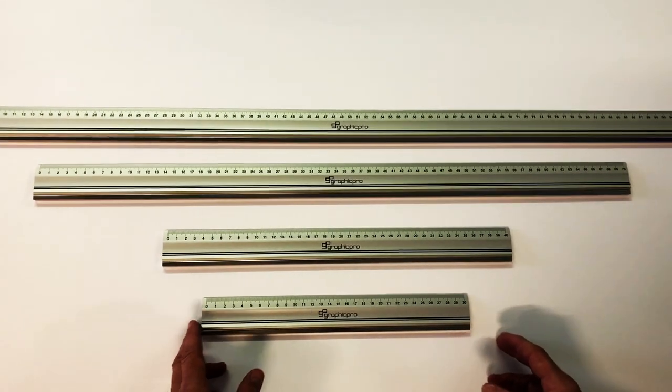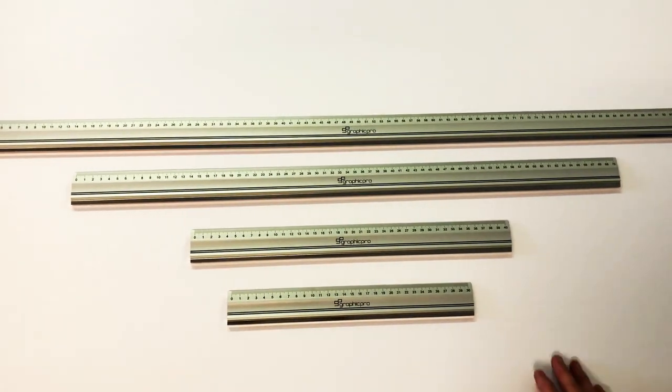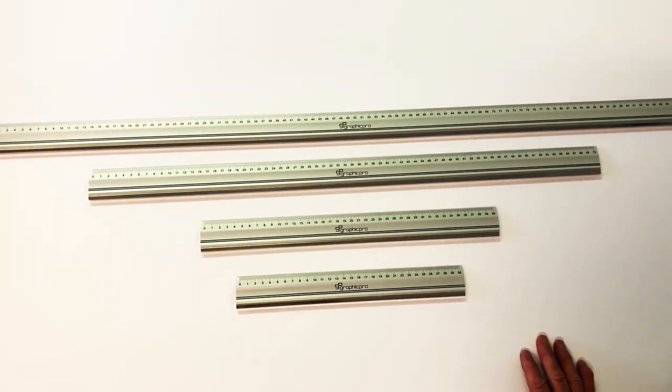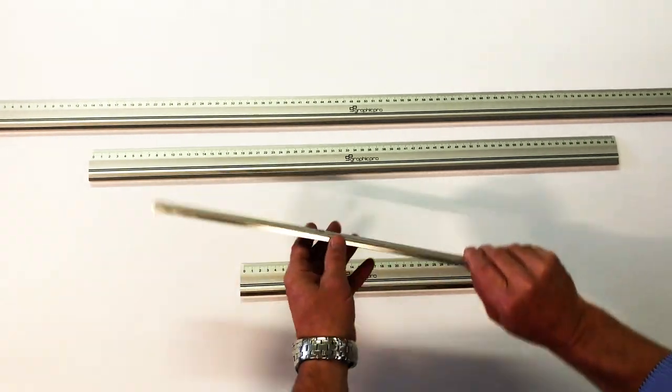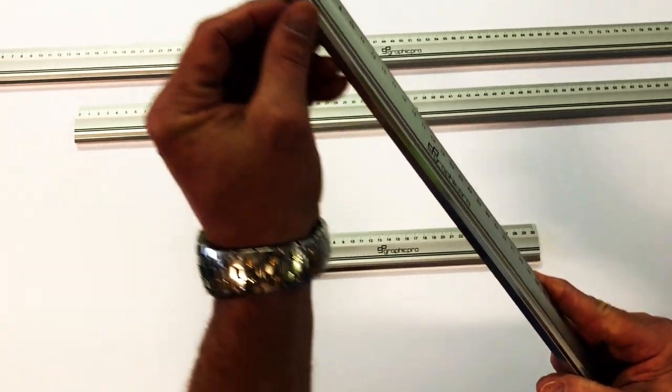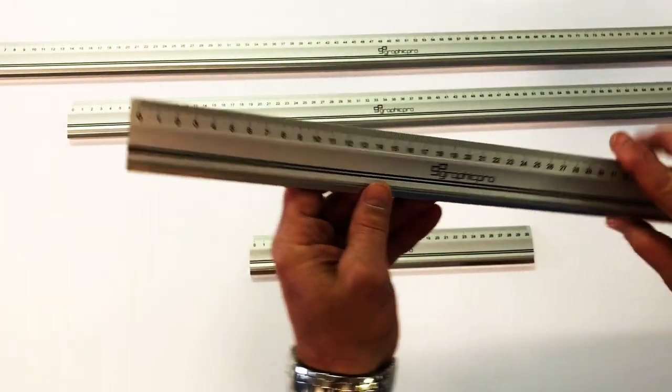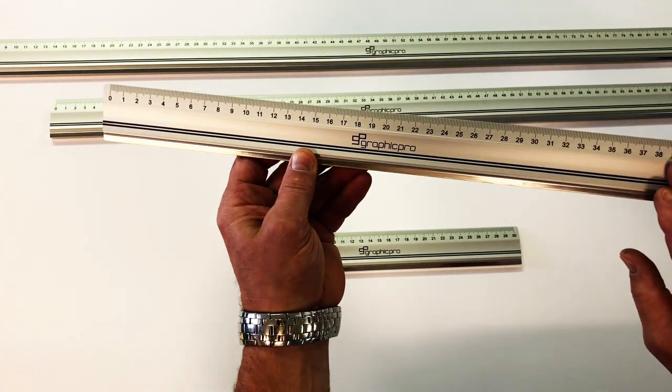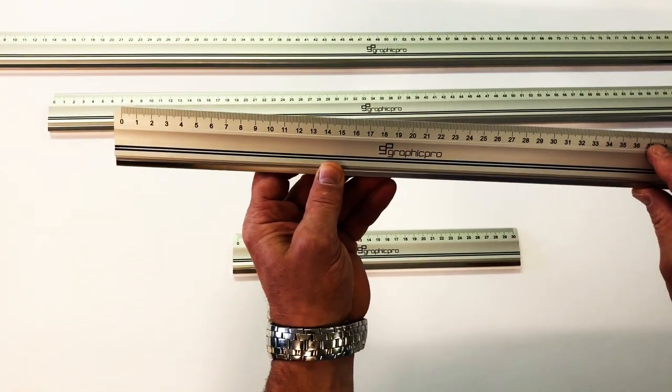I just want to introduce our new Graphic Pro range of aluminum cutting rulers. These also have a steel cutting edge down the length here, and obviously a graduation of centimeters and millimeters down the main edge of the ruler.